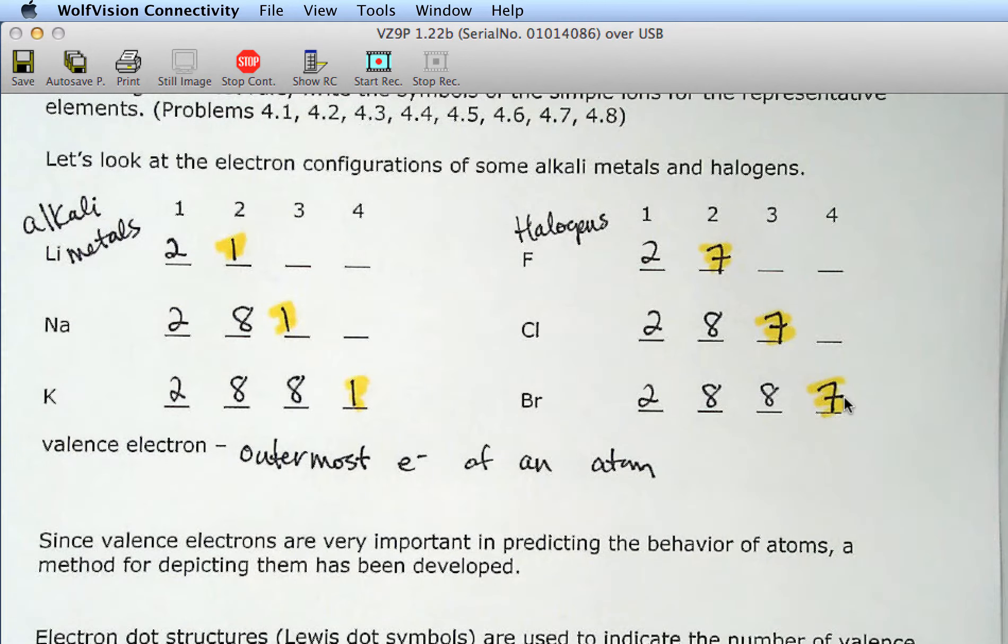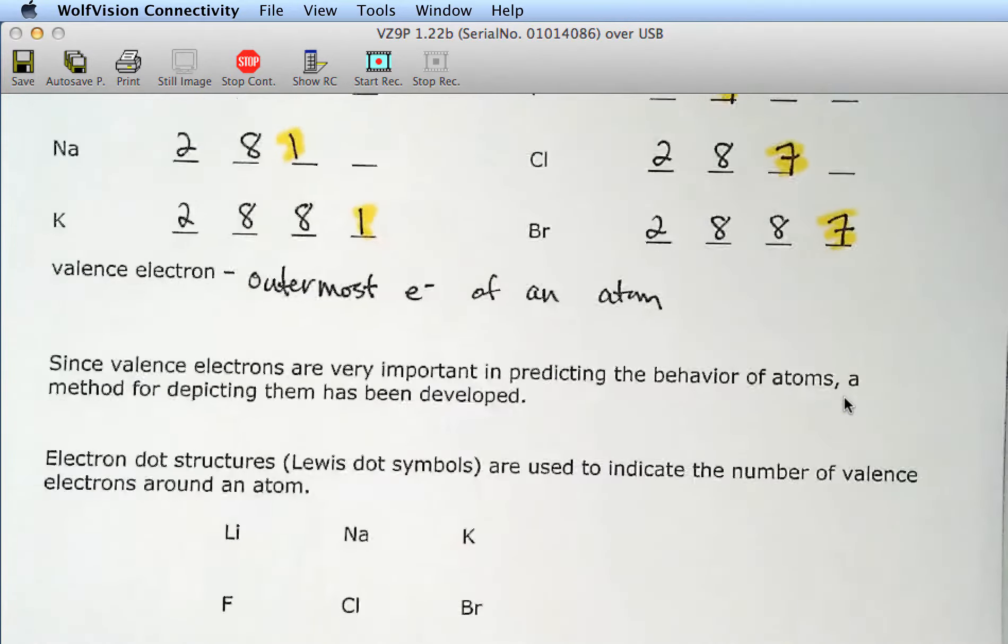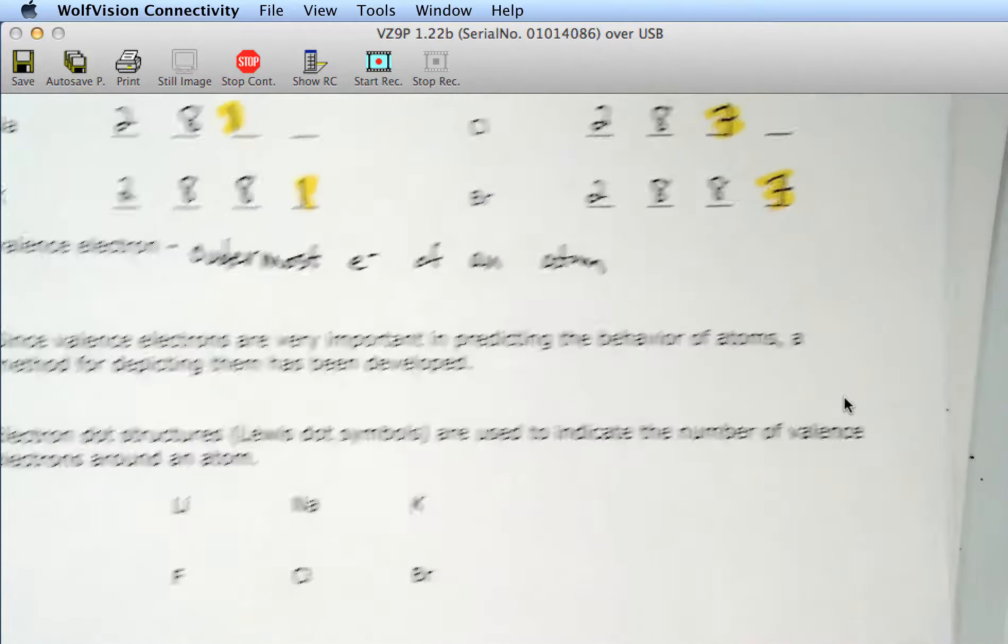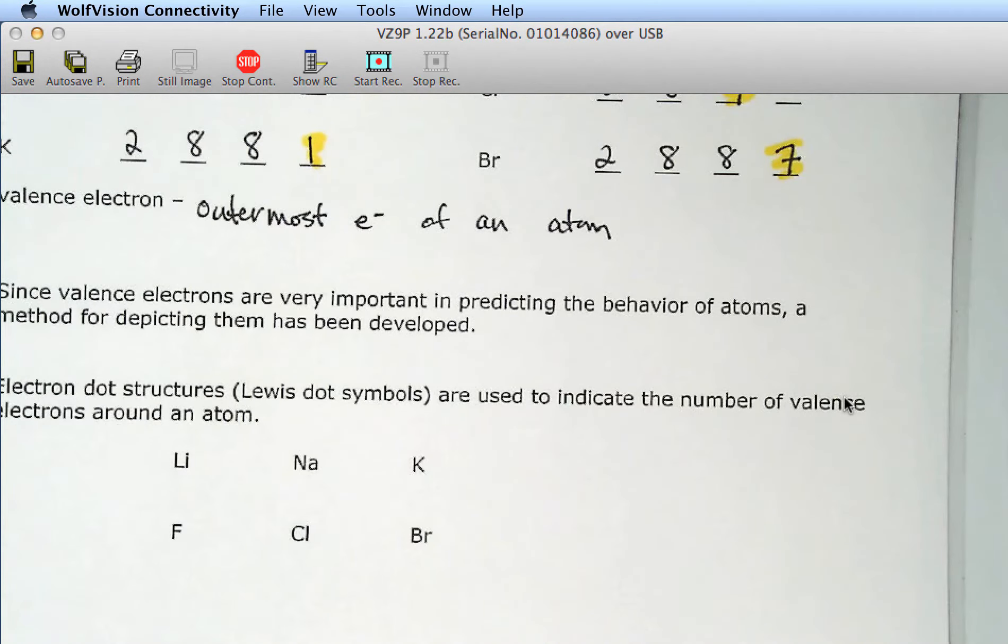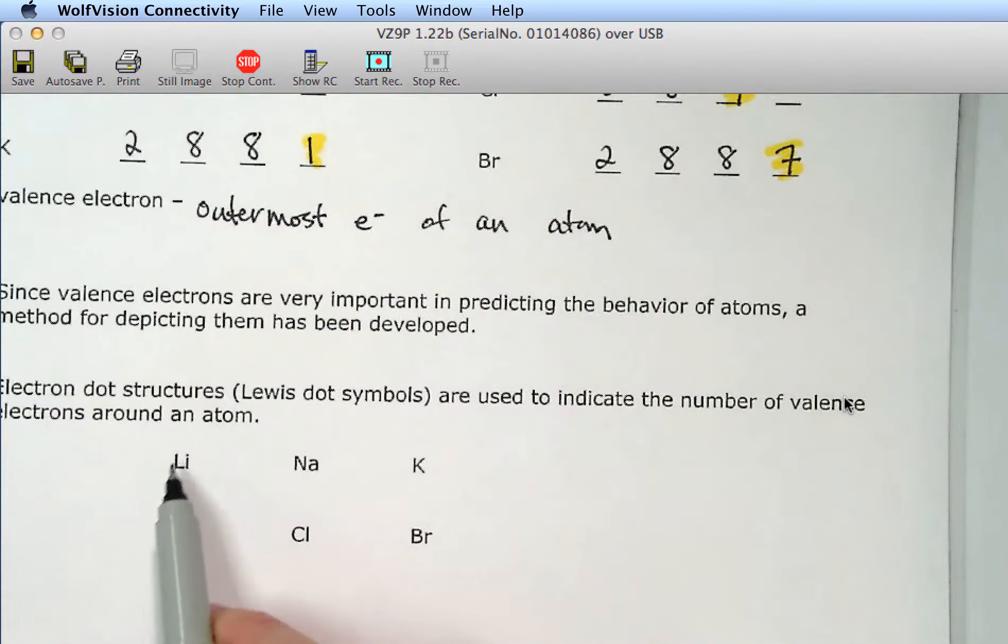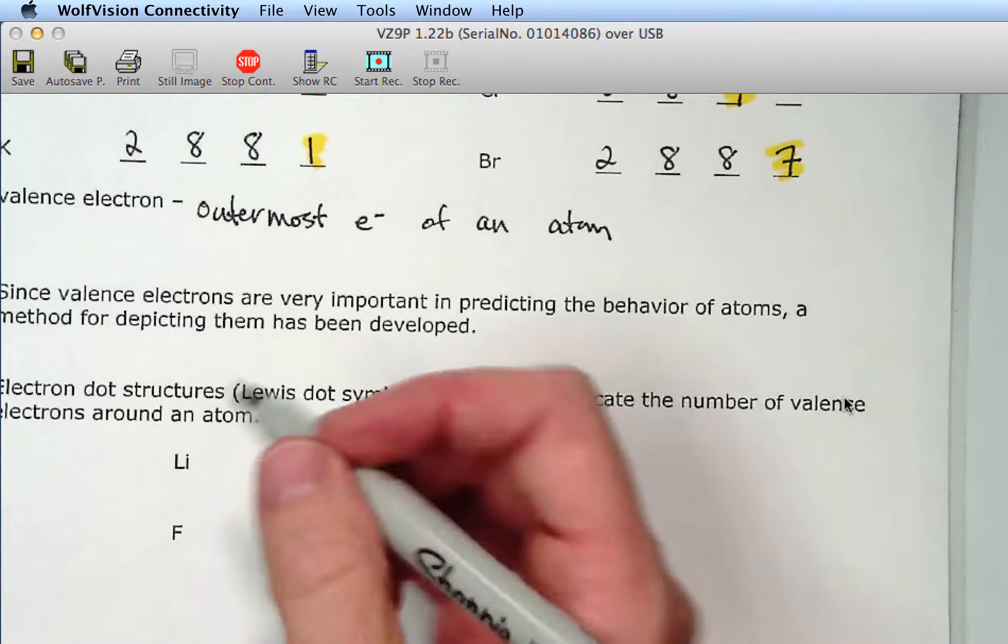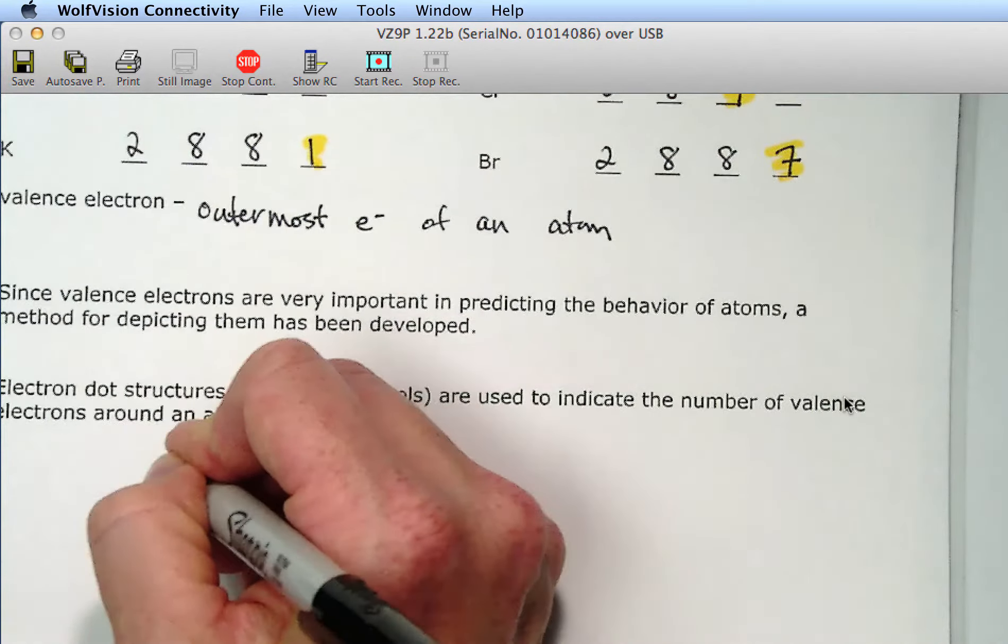So these groups are grouped accordingly because they have the same number of valence electrons. So you have one valence electron in your alkali metals. You have seven valence electrons in your halogens. So the valence electrons are the outermost electrons of an atom.